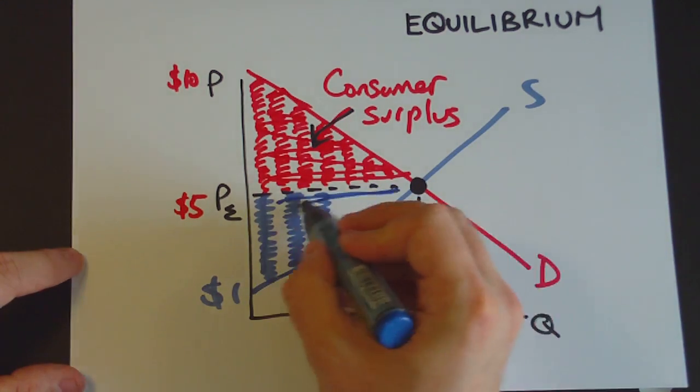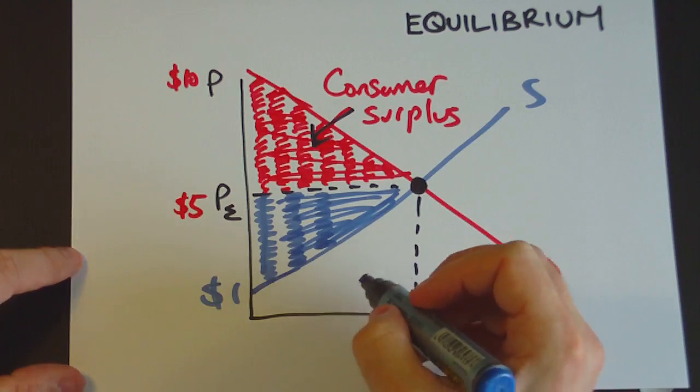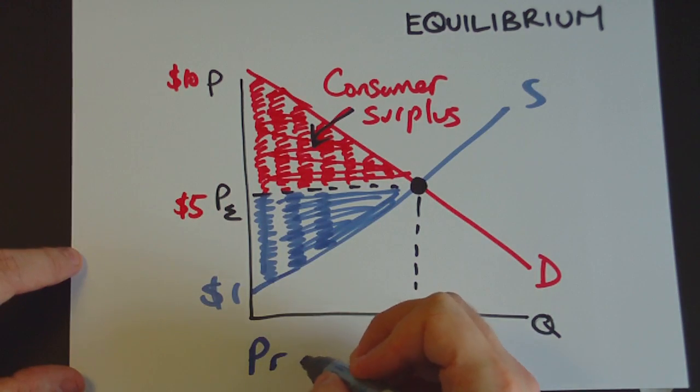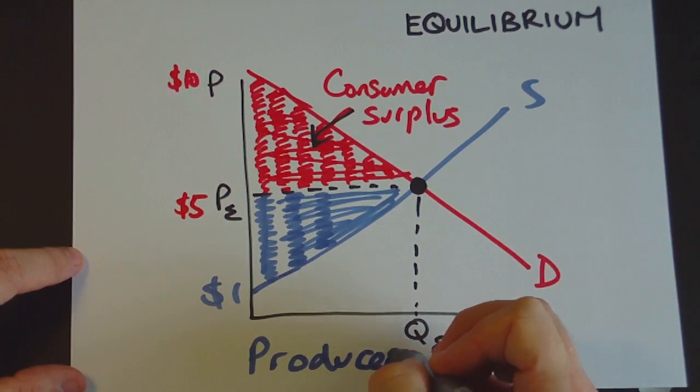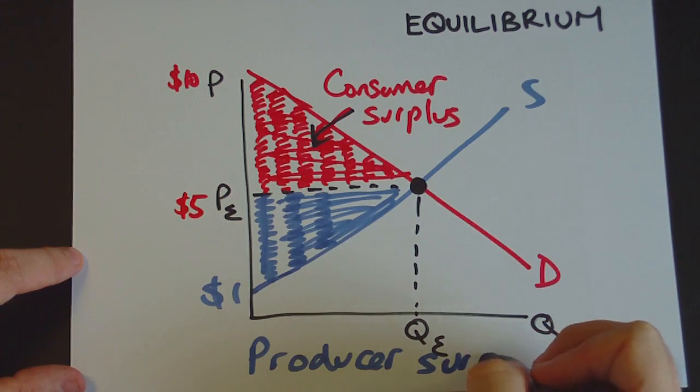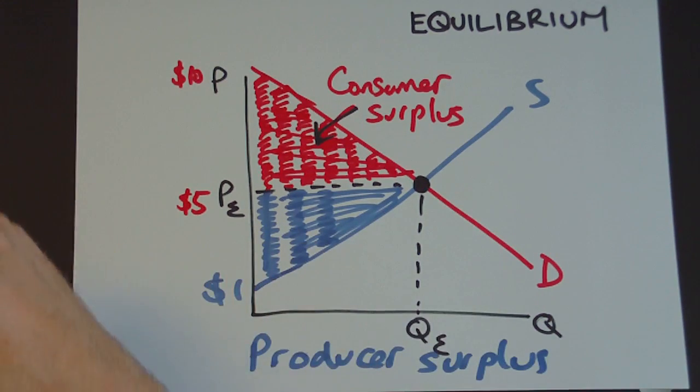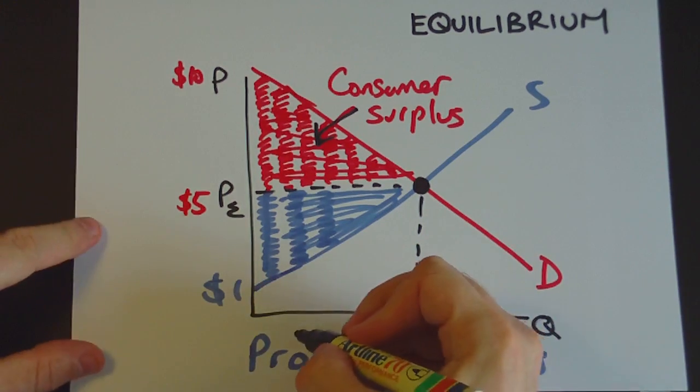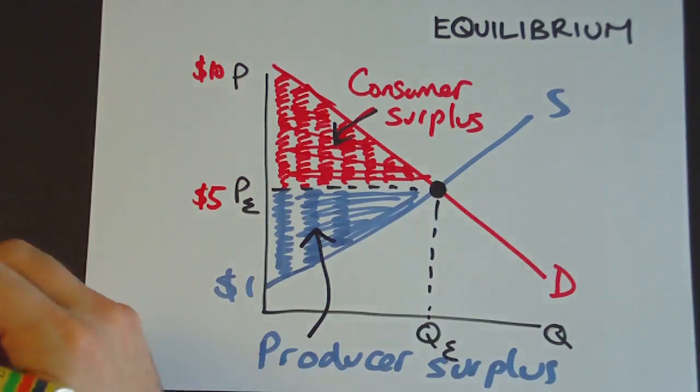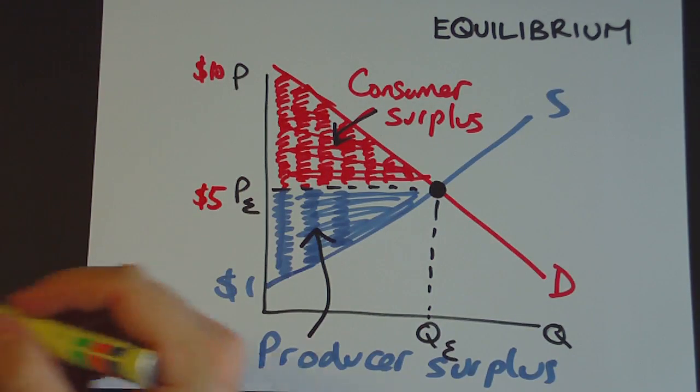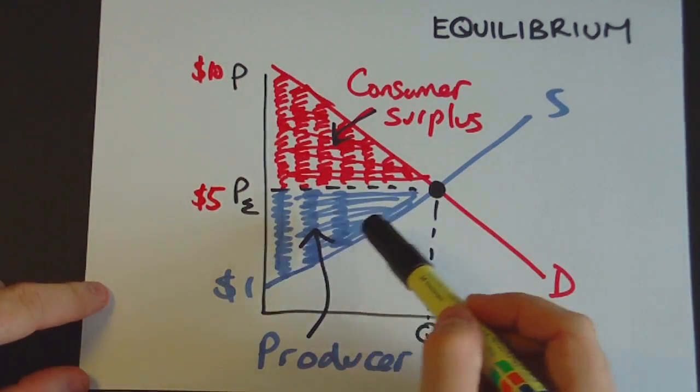So all this area here is what we call producer surplus. It's a surplus of sellers because they're able to sell the good in the market for a price that's higher than what they're actually willing to sell it for which is according to their supply curve.